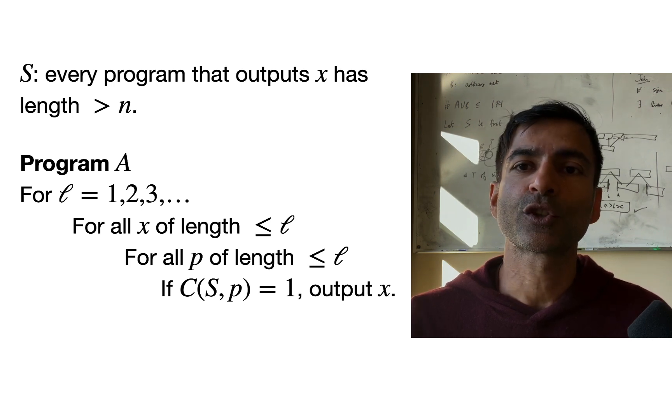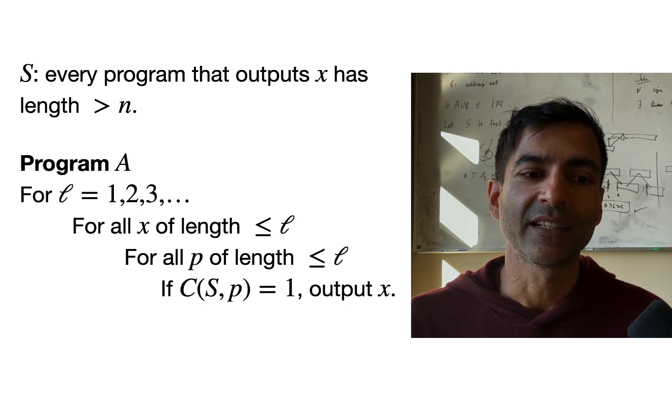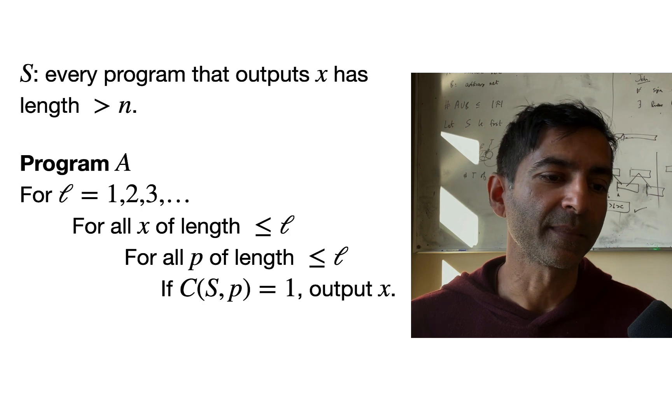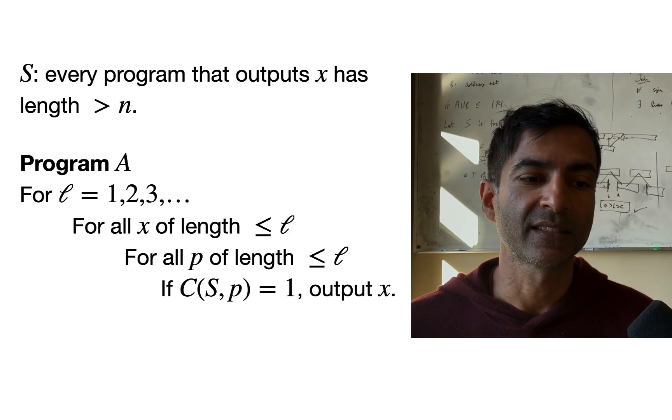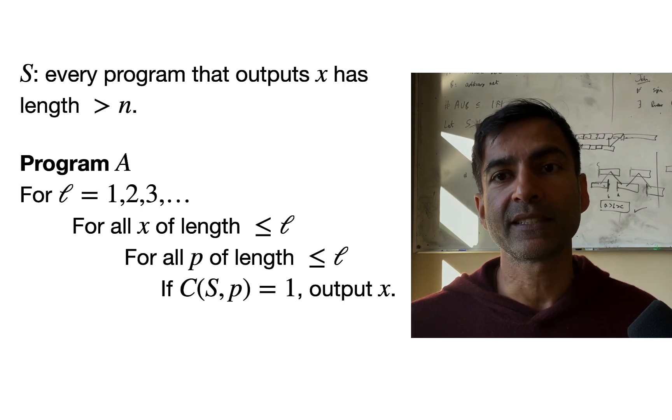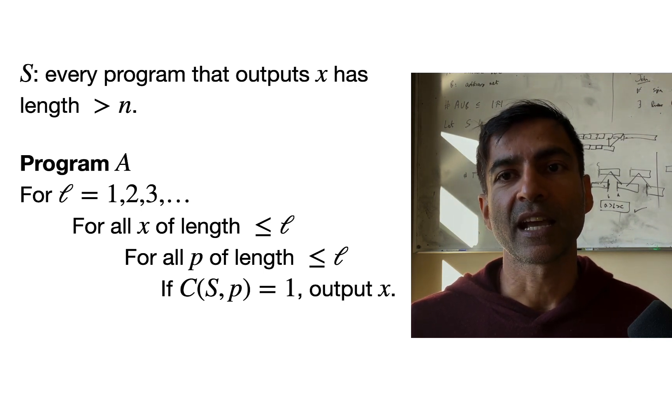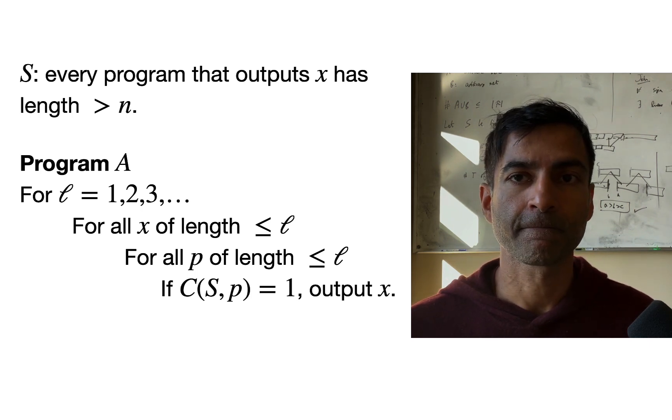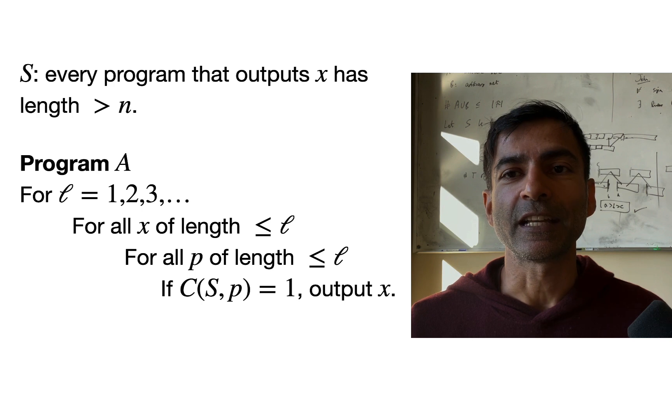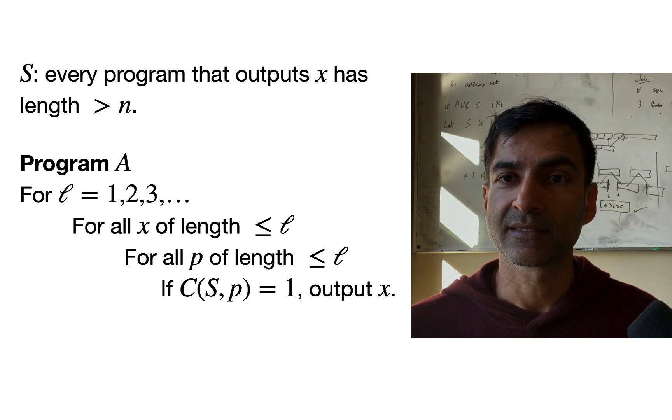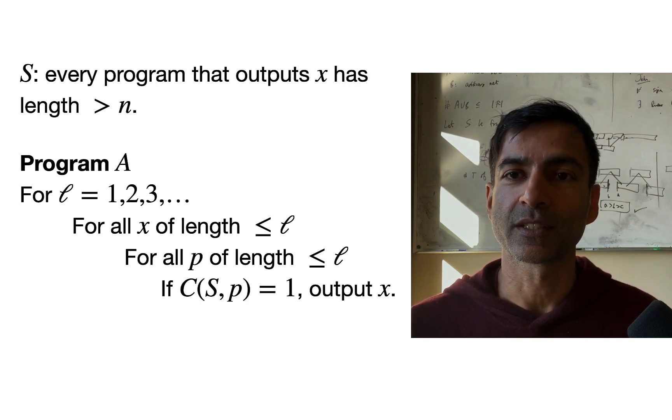And for each choice of x and p, it constructs the statement S, the statement that every program that outputs x has length greater than n. This is just a statement. It writes it down. And it feeds in that statement and the proof p into the proof checker C. And if the proof checker accepts p as a valid proof of S, then it outputs x. So this is the program.